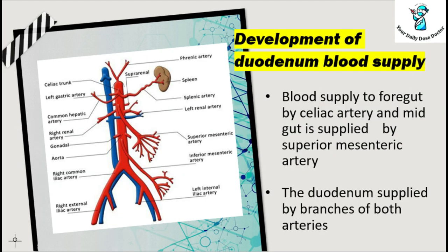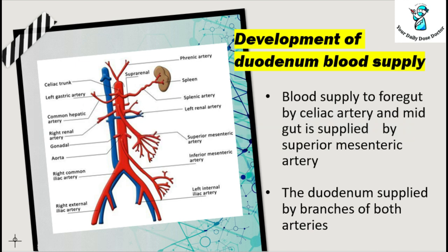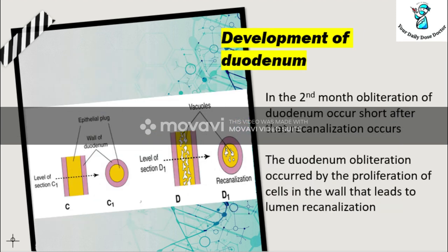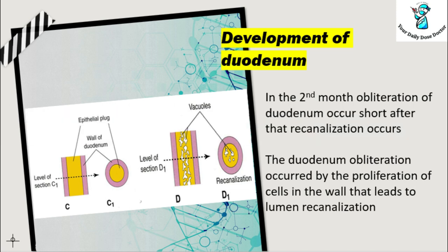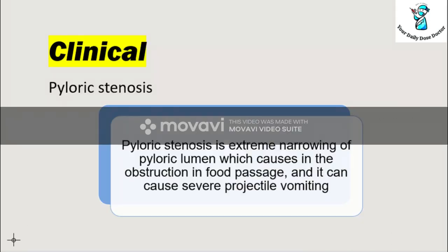Since the duodenum is part of both the foregut and midgut, it is supplied by the celiac artery and the superior mesenteric artery. When the duodenum develops into the C-shape, the epithelium proliferates, causing the lumen to obliterate. After obliteration, re-canalization occurs — a whole tube forms which later converts into a well-defined canal.